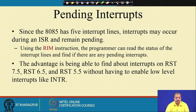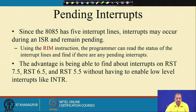The 8085 has 5 interrupt lines, and interrupts may occur during an ISR and remain pending. Using the RIM instruction, the programmer can read the status of the interrupt lines and find if there are any pending interrupts. This is the utility of the RIM instruction — the advantage is being able to find about interrupts on RST 7.5, 6.5, and 5.5 without having to enable a low-level interrupt like INTR.